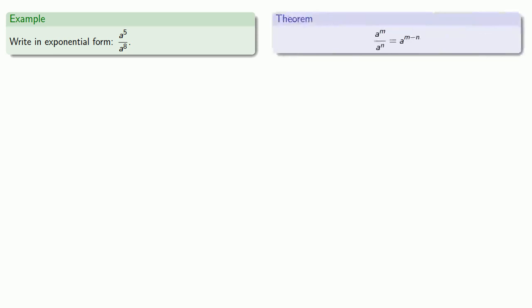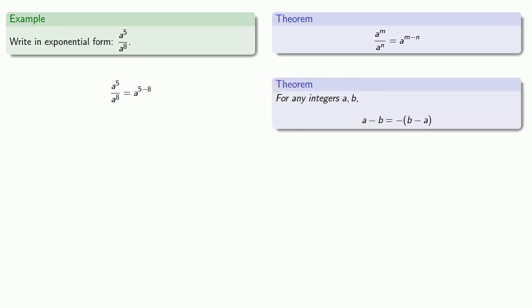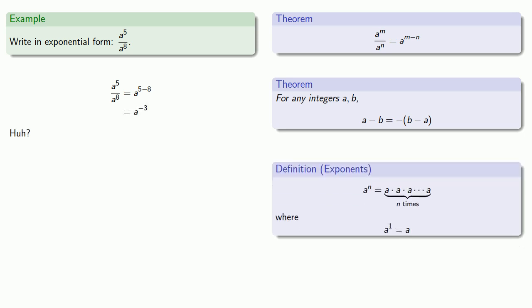We have the quotient: a to power m over a to power n is going to be a to power m minus n. And so this quotient is a to power five minus eight, which is a to power negative three. But weren't exponents supposed to tell us how many times something appeared? So how can a appear negative three times?